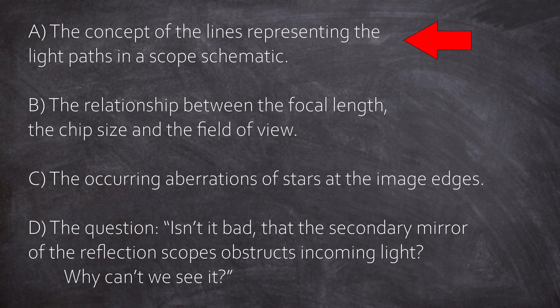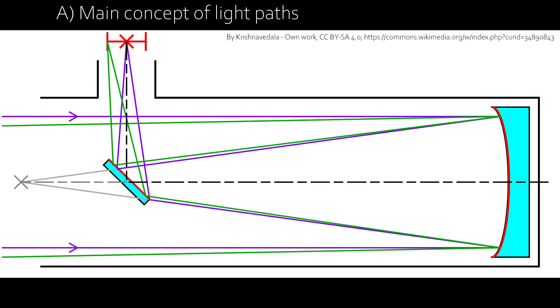Hi, it's Chris, welcome back. This episode will be a bit technical, covering aspects I couldn't add to the last video because it would have confused everyone, especially me. So we want to cover four topics of telescopes: A) the concept of the lines representing the light paths in a scope schematic, B) the relationship between the focal length, the chip size, and the field of view, C) the occurring aberrations of stars at the image edges, and D) the question: isn't it bad the secondary mirror of reflection scopes obstructs incoming light? Why can't we see them?